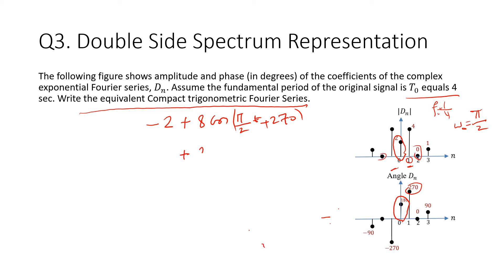For the last expression we'll get 2 times cos. The frequency is 3ω₀, which is 3 times π/2 times t, because the scaling factor is 3 and the ω₀ is π/2. And then the angle is 90 degrees, so this is plus 90.